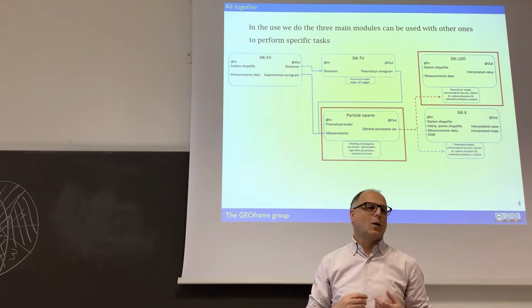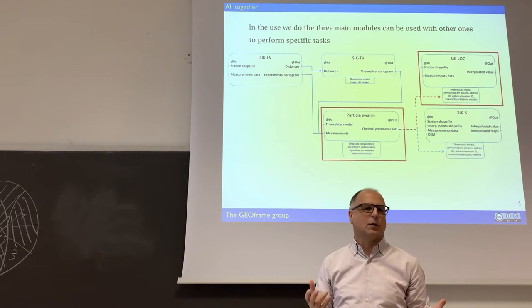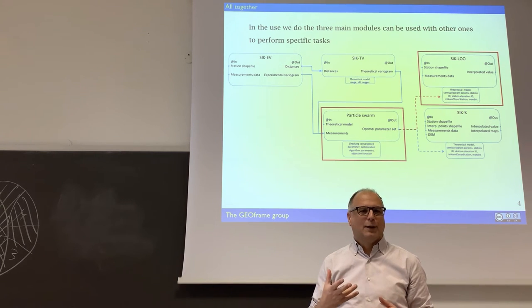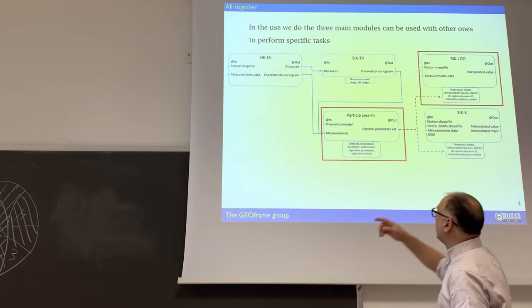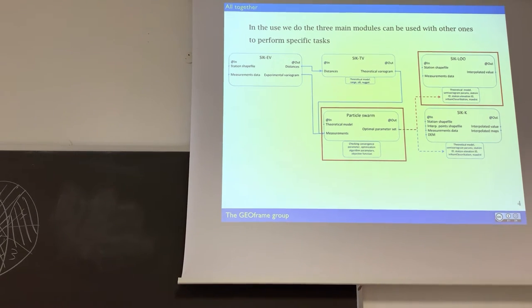So the procedure is quite stupid from the theoretical point, from the conceptual point of view, but it's very cumbersome to do if you don't have a procedure that does it. And we have it, and this is C LOO. So it simply takes n points, takes away one, does kriging with the n minus one, and then estimates the error with the last one, and repeats the operation for all the combinations.